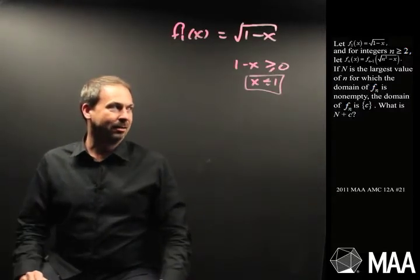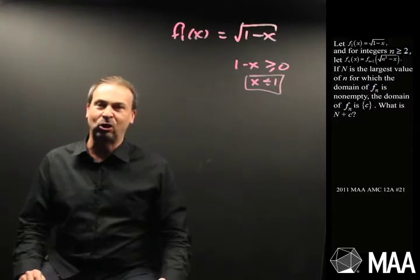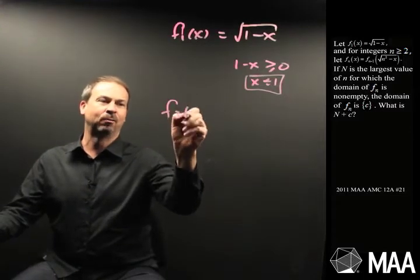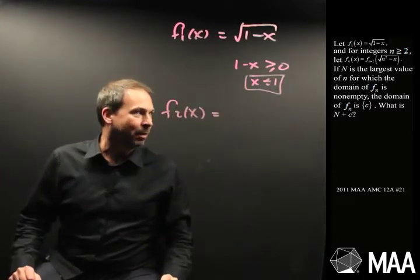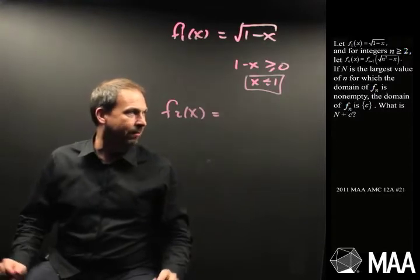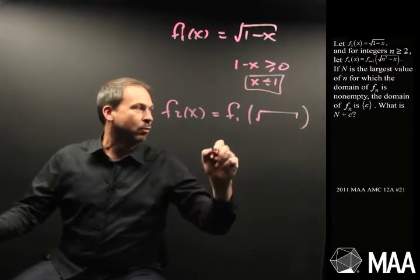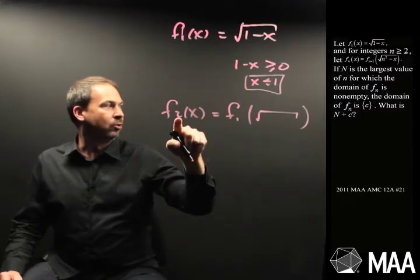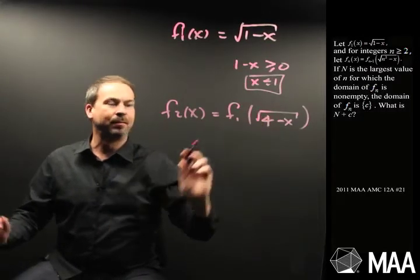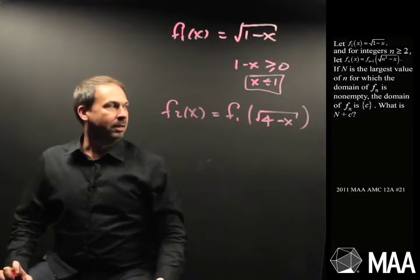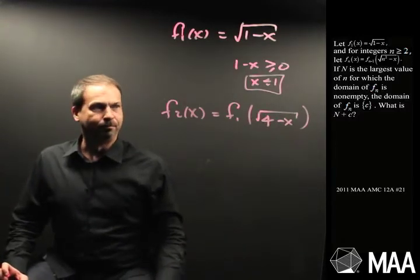Alright, what next? Let's build up the functions. I guess we want f2. What is f2 of x? It is, by this weird definition, f1 of the square root, and what goes in? n is 2, n squared, so it's 4 minus x. Alright, so I guess I want to look for the domain of this one.